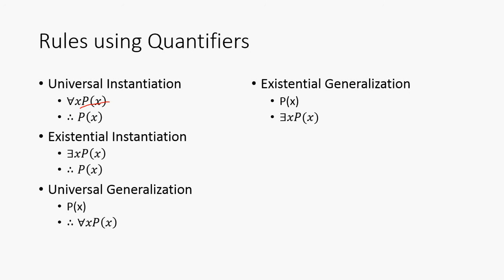Universal generalization: P of X, therefore for all X P of X. This is sort of like in the opposite direction of instantiation. There's also existential generalization: P of X, therefore there exists an X such that P of X.